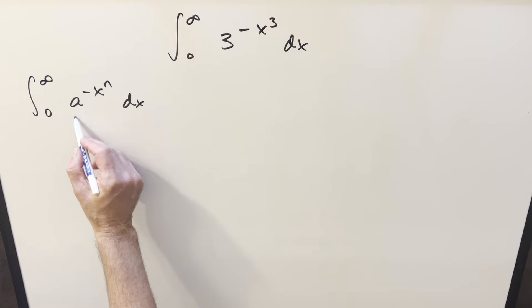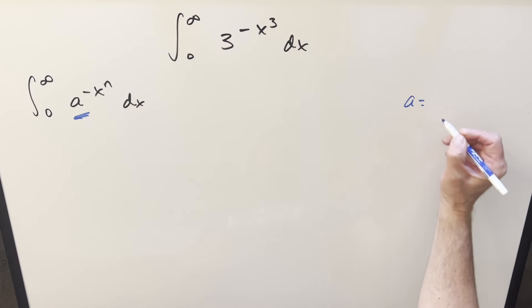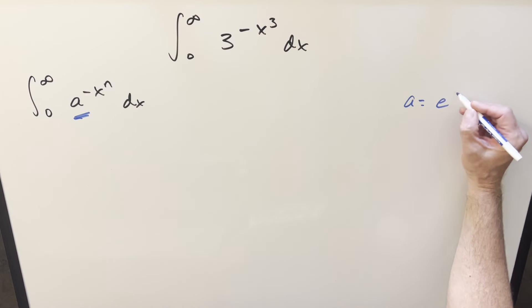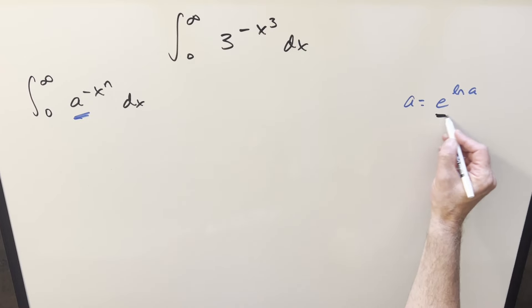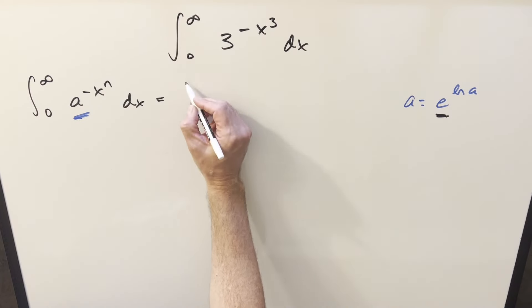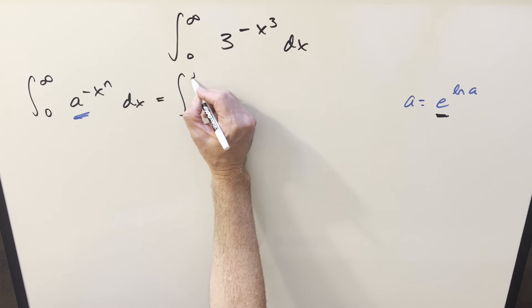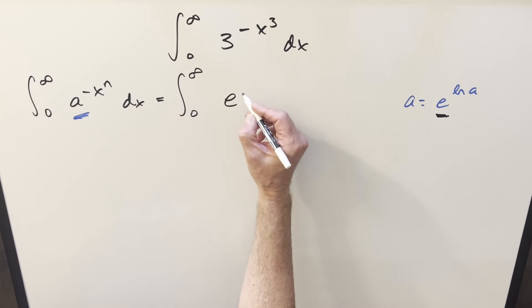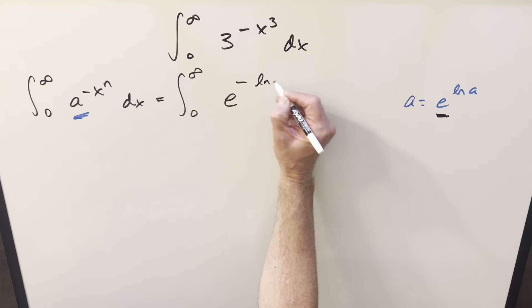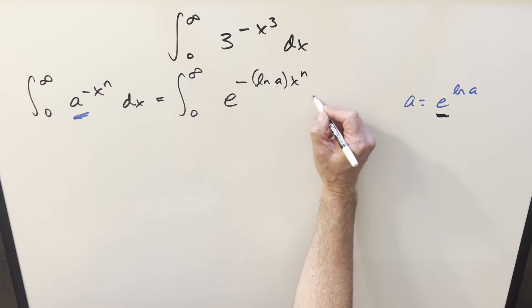Okay, now to get started with this, what I want to do first is just deal with this base. We don't really like having the base as a. We want to have the base be e. So what I can do is use this formula. We can write a, just e to the ln a. And so you can already see that we're heading back towards the Gaussian integral again, but let's just update this. So what we're going to do, so for this, let's use exponent properties on this. I can write this. We'll now have e as our base. This is going to become minus ln a, well, it times x to the n dx.